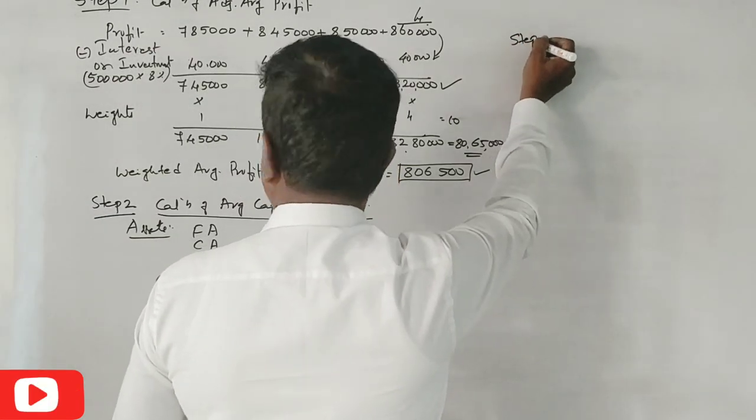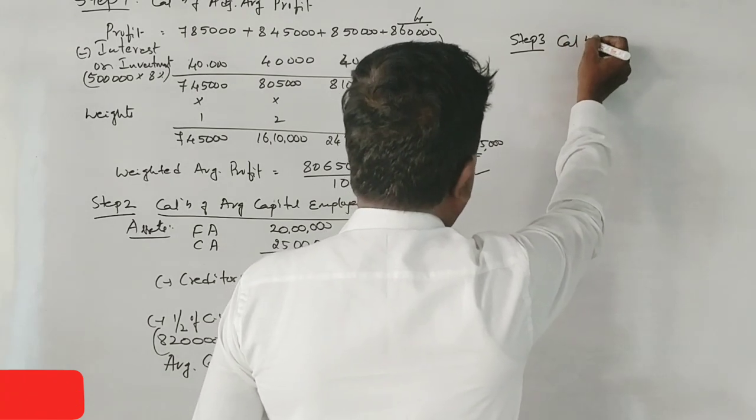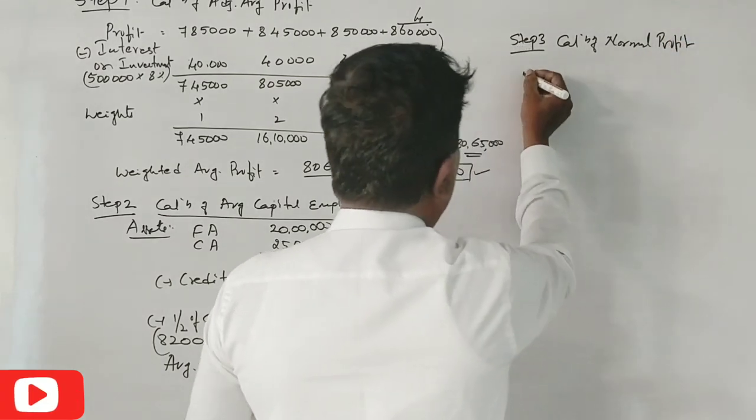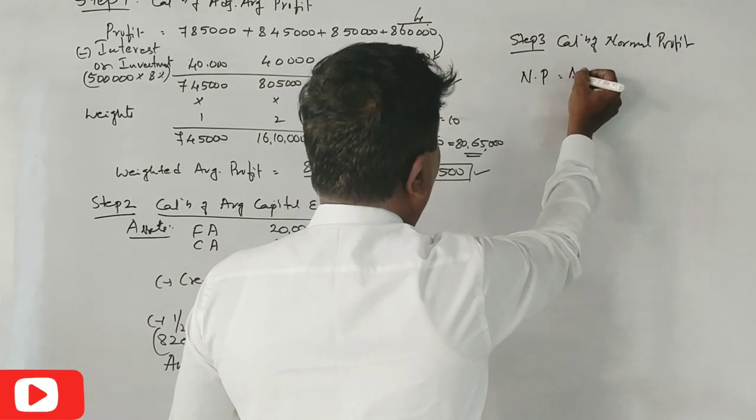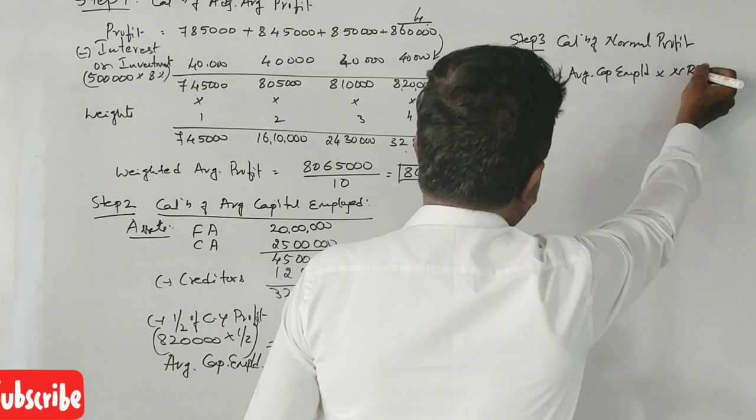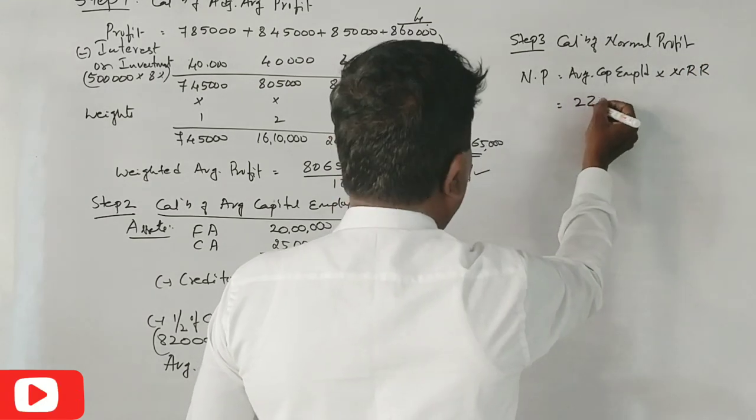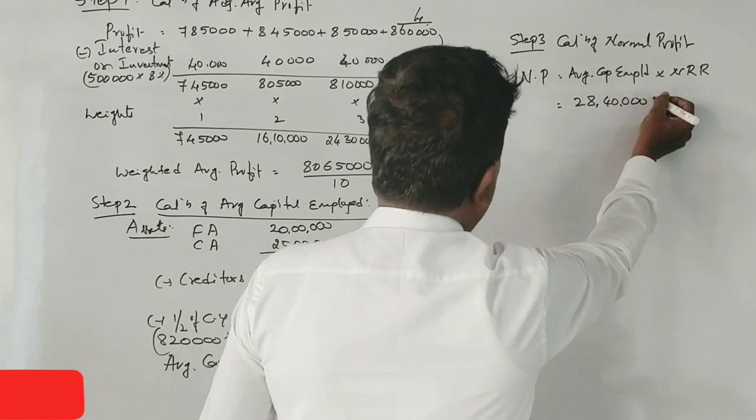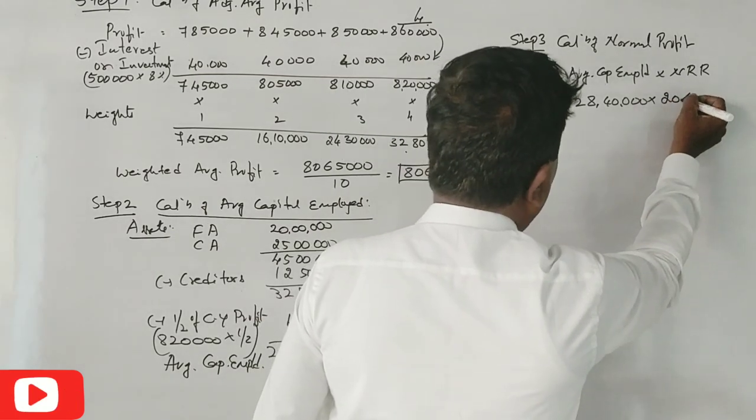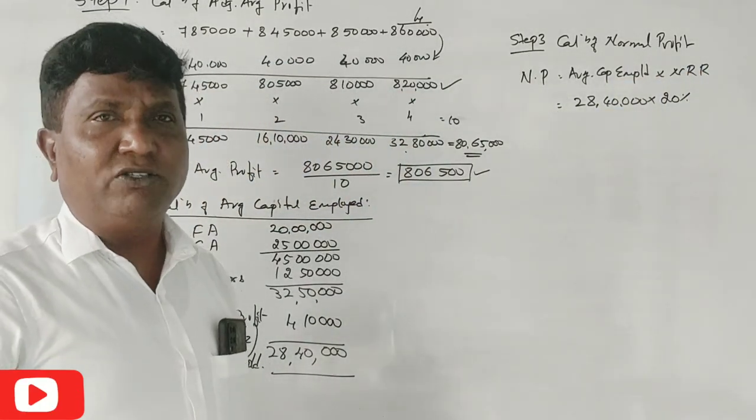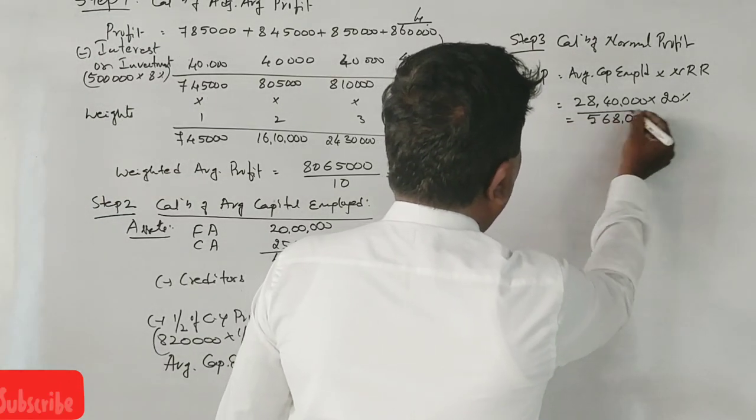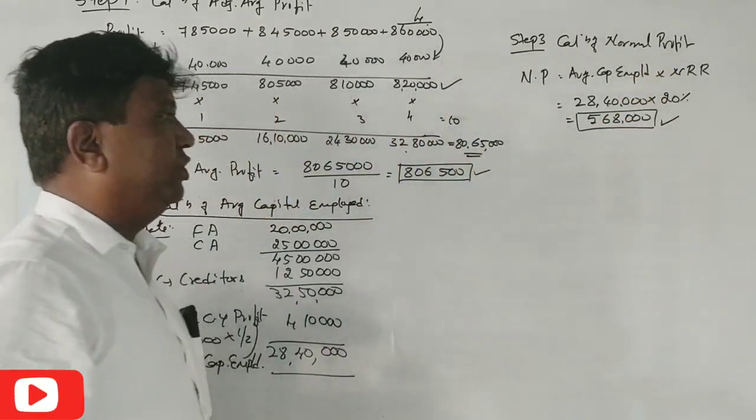Step 3: Calculation of normal profit. Normal profit equals average capital employed times normal rate of return. 28,40,000 times 20% equals 5,68,000.